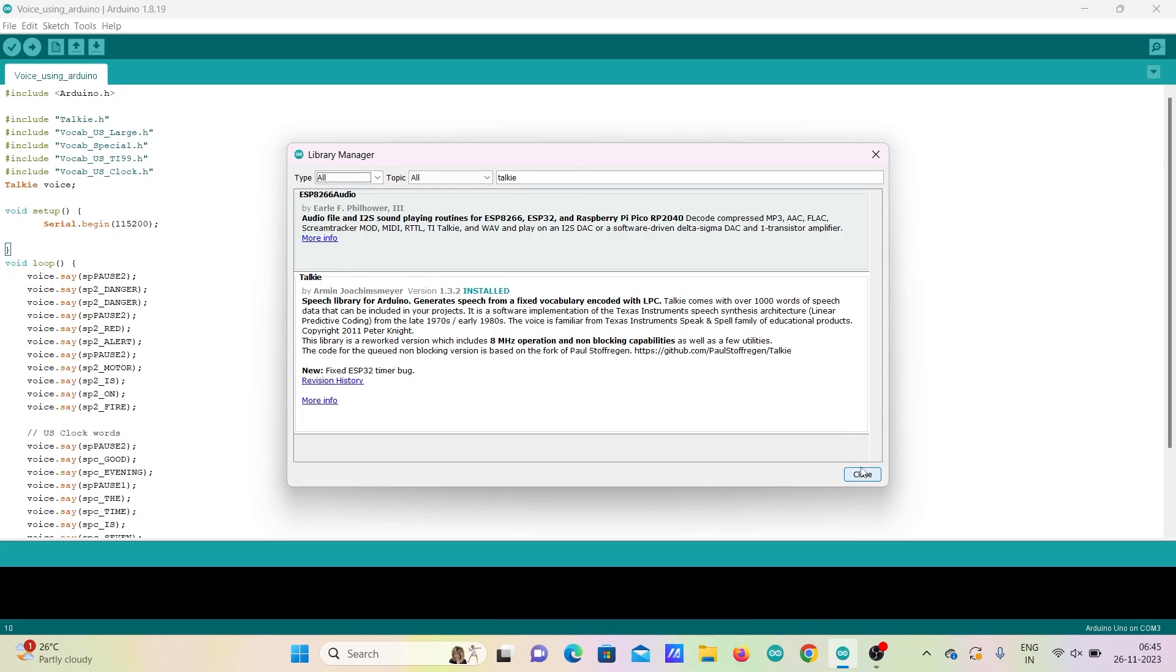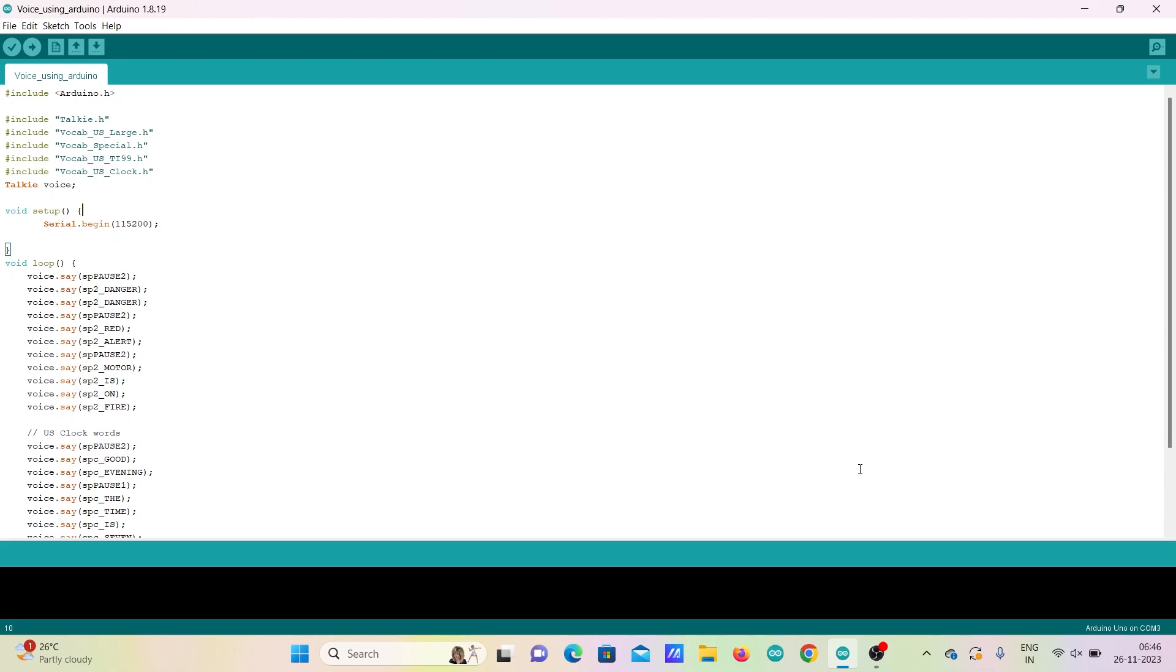After installing the library, open the code. You can see that talkie.h is given in the code. We have to also include the standard vocabulary of words in the program. The list of words and the particular vocabulary is given in the description box.